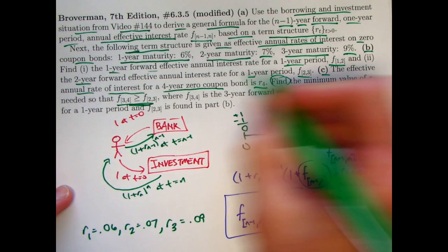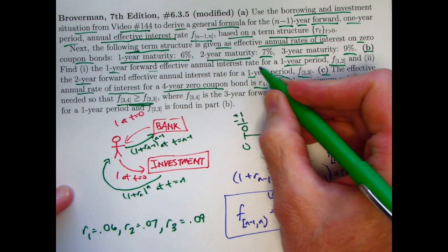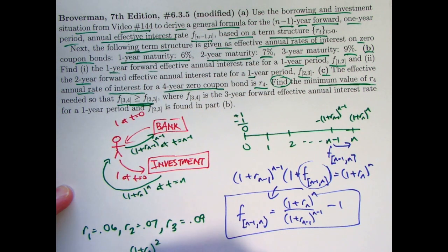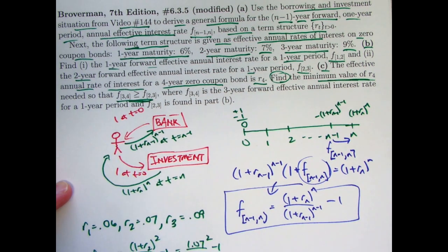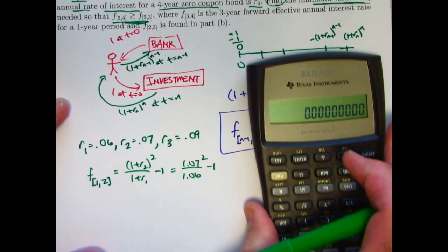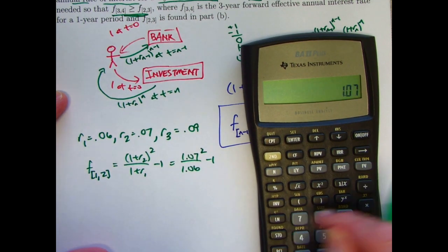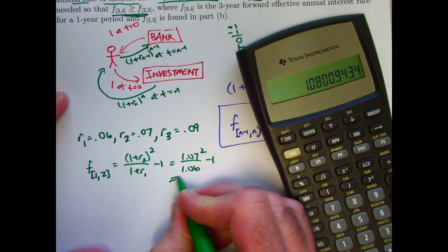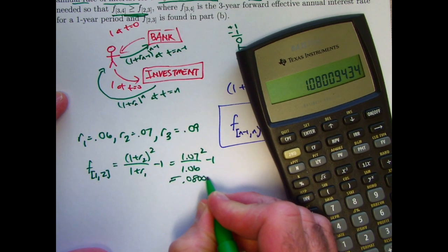So, in this case, with f12, n is 2. So, we get 1 plus r2 squared over 1 plus r1 minus one. Using these numbers, that's 1.07 squared over 1.06 minus one. Quickly using the calculator, 1.07 squared divided by 1.06 minus one will be about 0.8009.